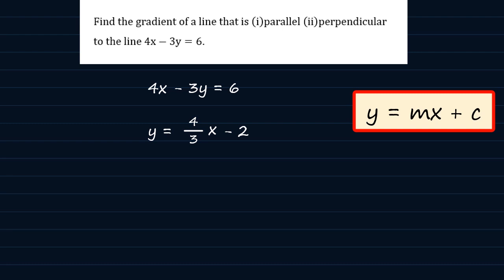So, now from this form of the equation, we are able to know what the gradient of this line is. And the gradient m is 4 over 3.